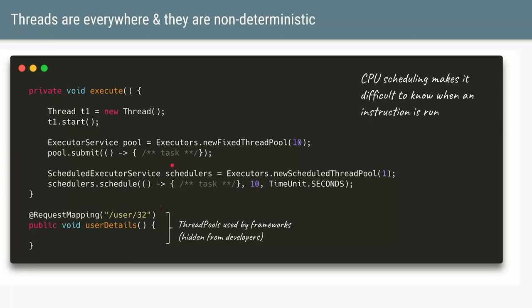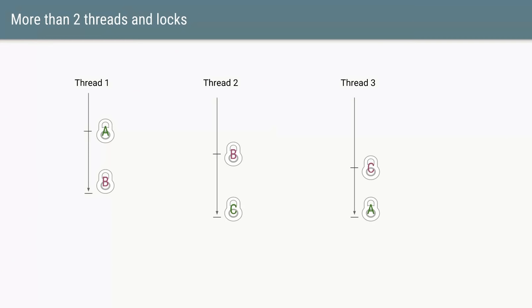Even when threads are in a runnable state, the CPU scheduler gives each thread a time frame to execute. If a thread doesn't complete its task in time, it's bumped off, goes back to runnable, and another thread gets a chance. Because of this fairness in CPU scheduling, it's very difficult to know exactly when a particular instruction or lock acquisition happens.